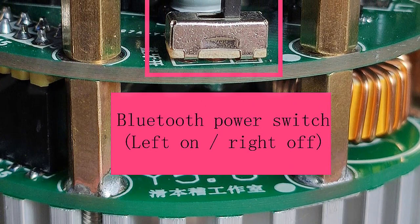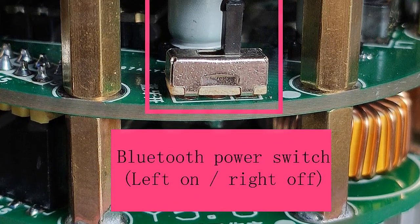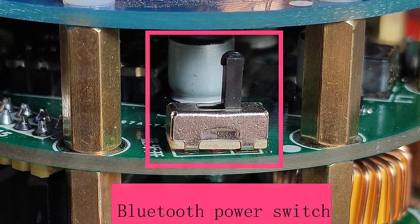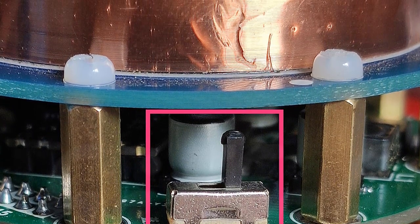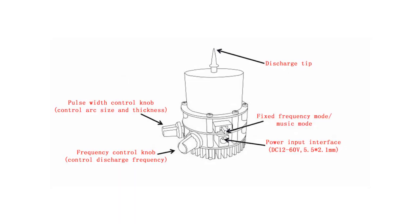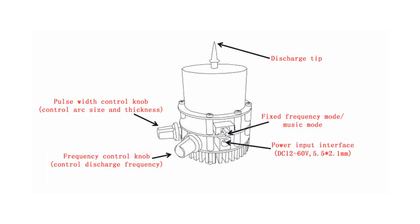Tesla coils are popular devices among hobbyists and enthusiasts. They can be used for a variety of purposes, such as generating high voltage, low current electricity, or as a lightning simulator. The Tesla coil is also known as an oscillating current transformer and was invented by Nikola Tesla in 1891.